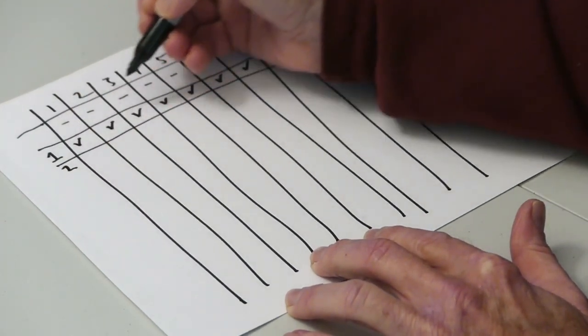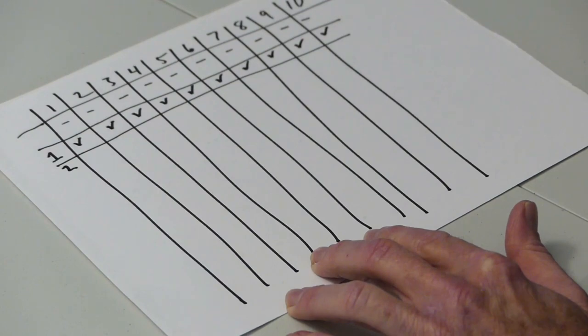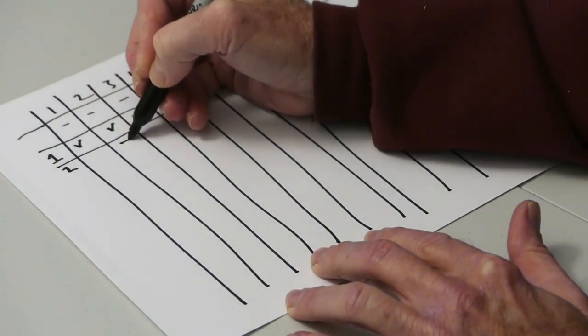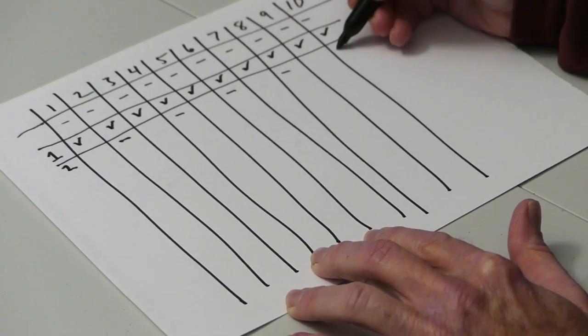Student number 2 comes in, starts at locker number 2, and switches the status of every other locker. That means they'll close lockers 2, 4, 6, 8, and 10.